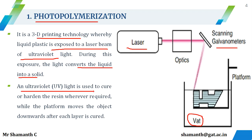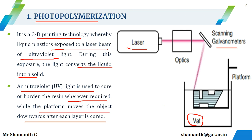An ultraviolet light is used to cure or harden the resin wherever required. Once the 3D model is transferred to the AM machine, you do not need to print all over the container where the liquid is filled — you only expose the light on the particular area where you need to form the 3D part. The platform moves the object downward after each layer is cured. After the UV light is exposed to each layer, the platform is moved downwards so that another layer can be printed on top of the one already printed.